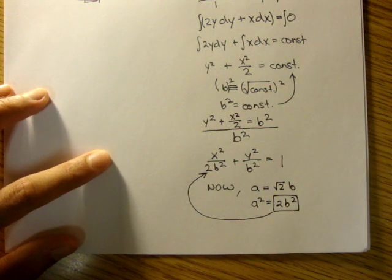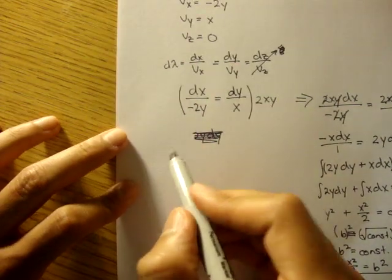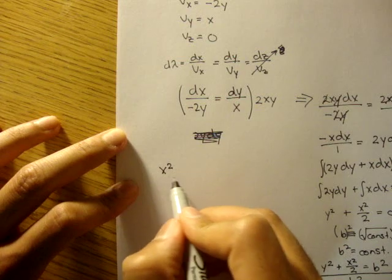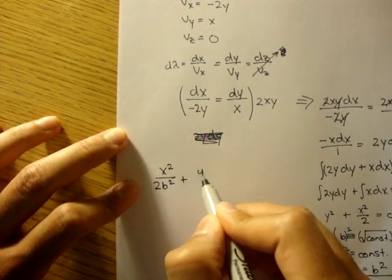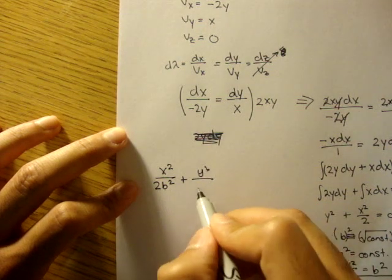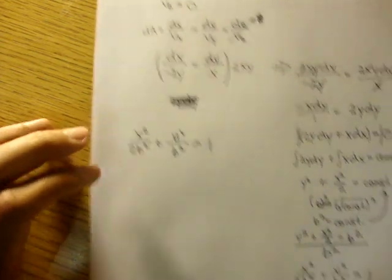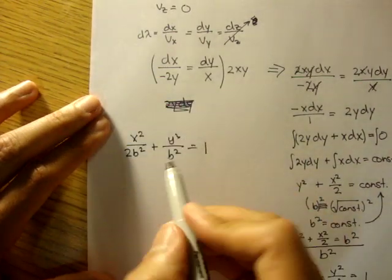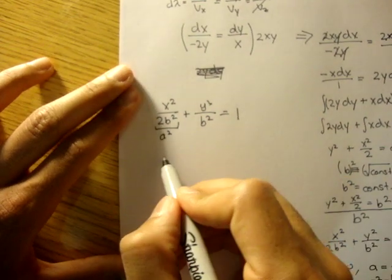Now, we can substitute this back into here. So let me just rewrite it here. We'll get x squared over 2b squared plus y squared over b squared is equal to 1. And here, we said a squared is equal to 2b squared. So this term right here is a squared.